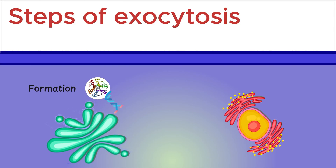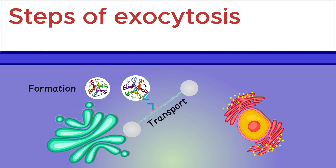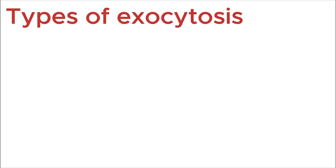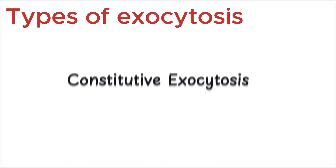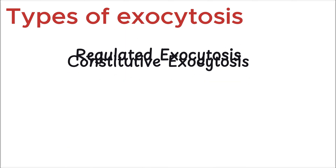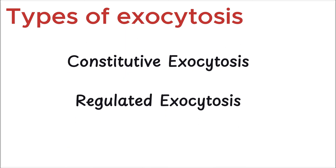Exocytosis occurs continuously in our body, but it's not always the same. There are two main types of exocytosis: constitutive exocytosis and regulated exocytosis.